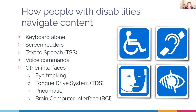How do people with disabilities navigate content? In many different ways. The great majority do it with just a keyboard. The University of Washington has an initiative called NoMouse.org where you can take the NoMouse Challenge and try navigating your content without a mouse. Other ways include screen readers, text-to-speech technologies, voice commands, and other interfaces such as eye tracking, tongue drive systems, pneumatic controls, or brain-computer interfaces.